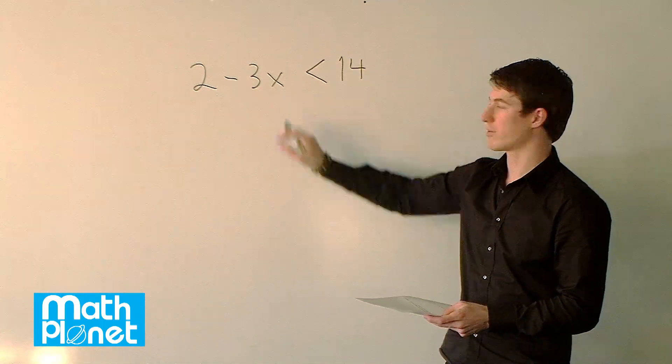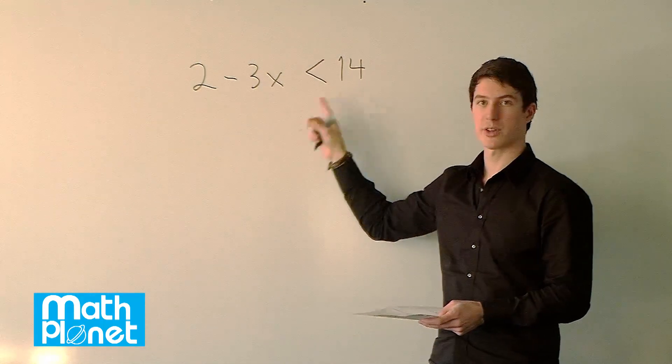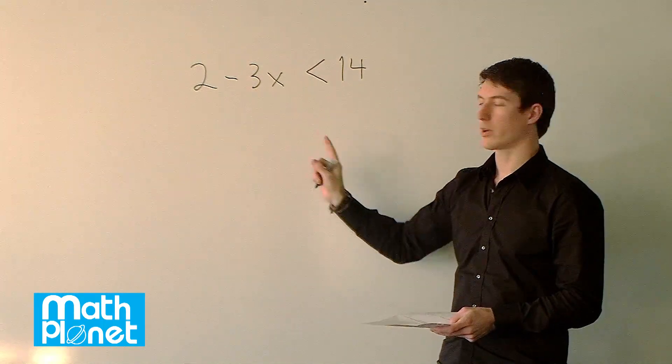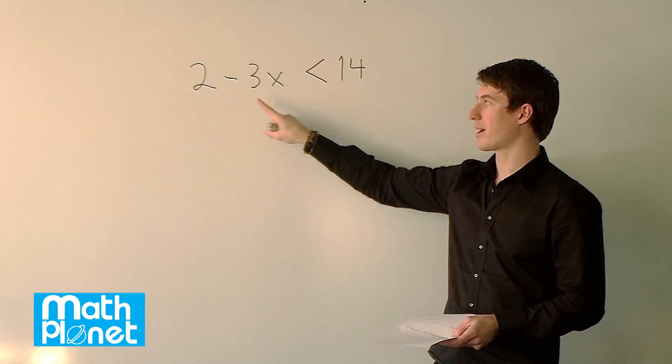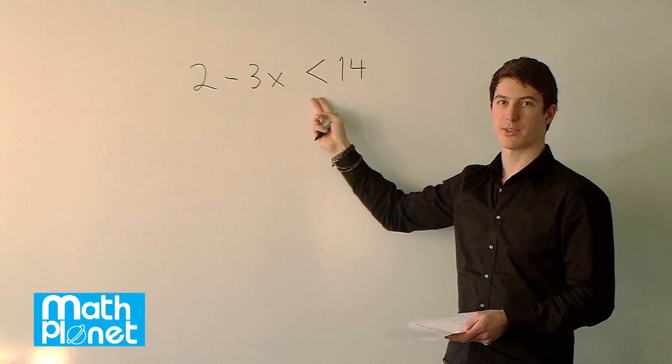We're going to have some range of solutions for x here. We can treat this just like a normal algebraic equation but with one caveat: when we multiply or divide by a negative number, we have to remember to flip this around - the inequality has to change sign.